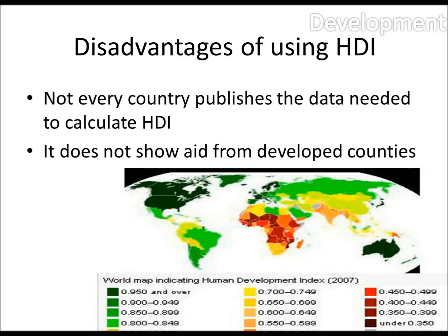Also, it doesn't show aid from developed countries. So there could be a country in, say, Sub-Saharan Africa where they're not doing too bad, and that's because a country from Europe has given them lots of aid. They're actually perfectly fine and developed, but they appear red or orange on the map, making them appear undeveloped.